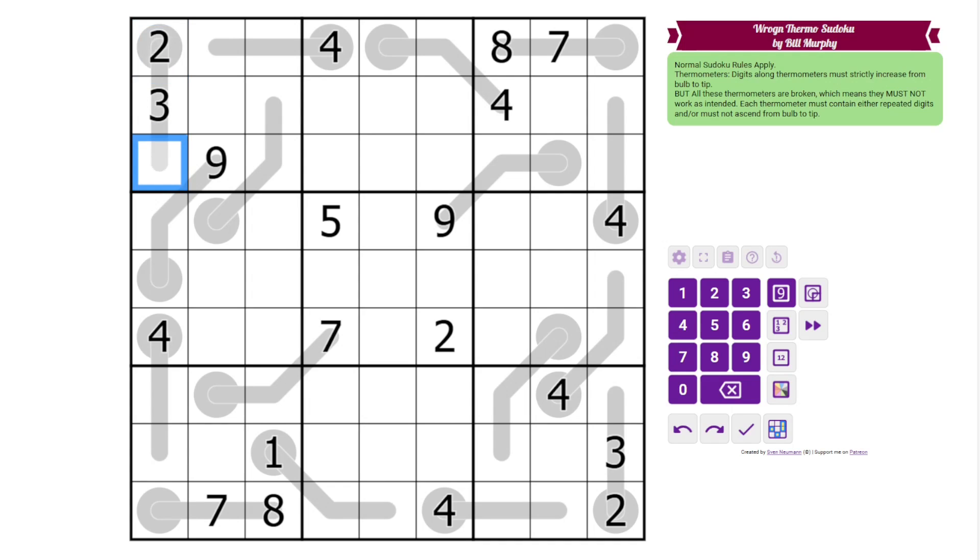This is 2, 3, and then something. If this digit were bigger than 3, this would be a valid thermo. So we can't have that because all the thermos are broken. The only digit that can go there is something less than 3, and the only digit we have for that is 1. The same is true down here. This is the same thermo.